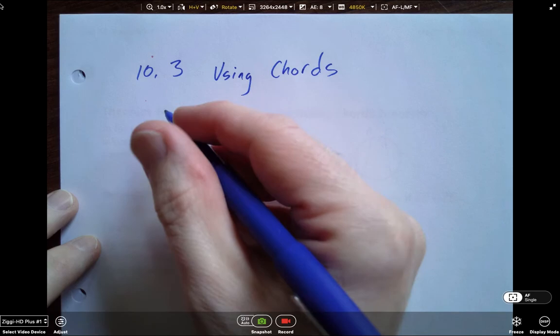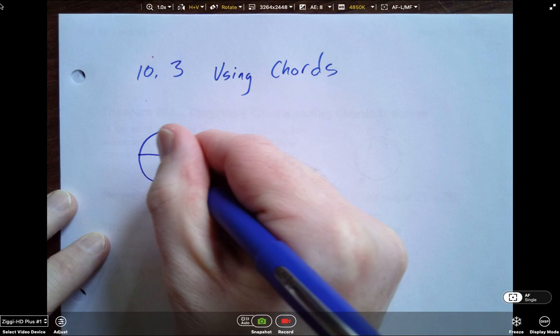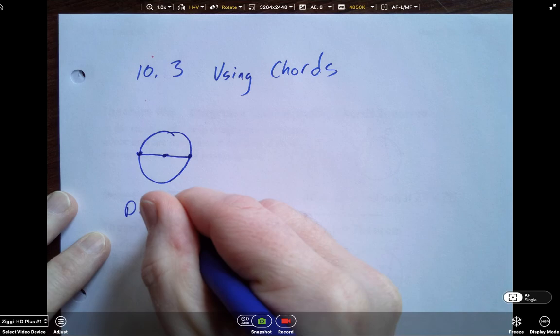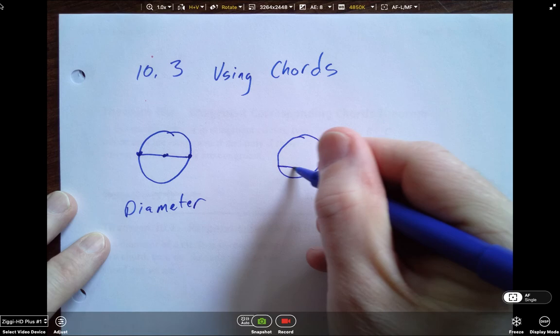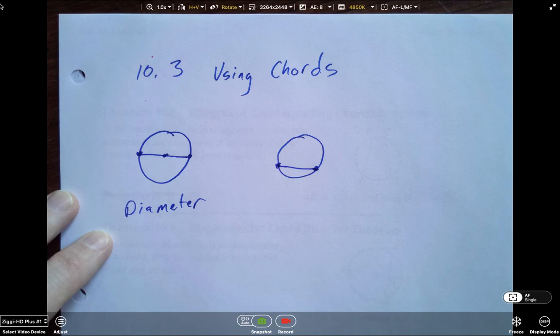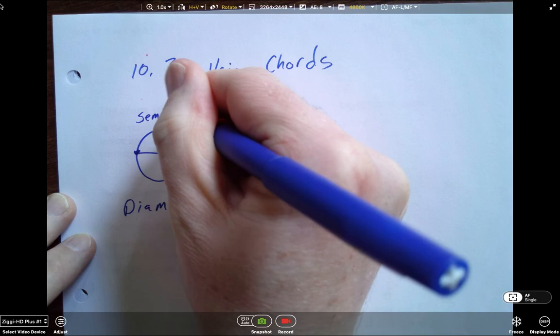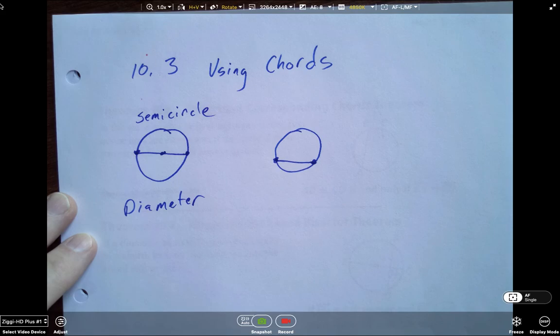As a quick review, remember a chord is any segment that has its endpoints on the circle. If it goes through the center, that's a very special chord. It's a diameter. If it's a diameter, it divides the circle into two equal parts. Remember we call that a semicircle. That means exactly one half of a circle.